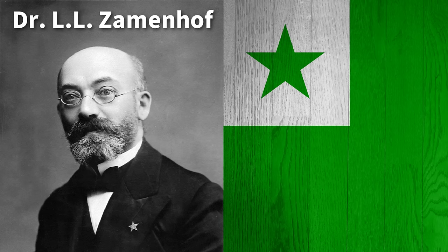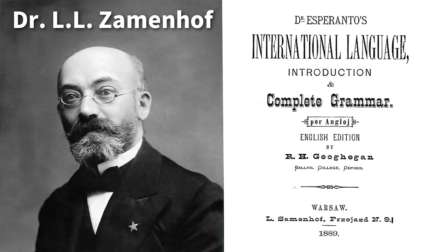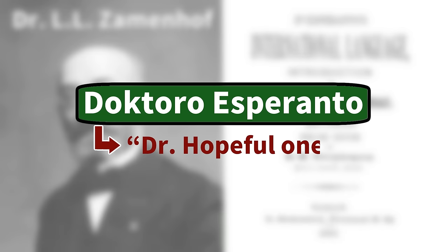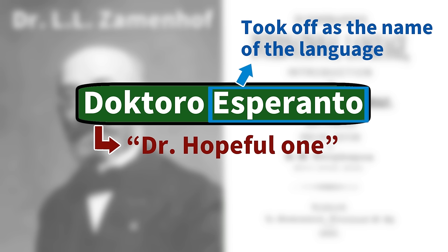It was created by a man named Dr. L.L. Zamenhof, who published the first book about it in 1887. The book was released under the pen name Doctoro Esperanto, which means "Dr. Hopeful One," and Esperanto took off as the name of the language.